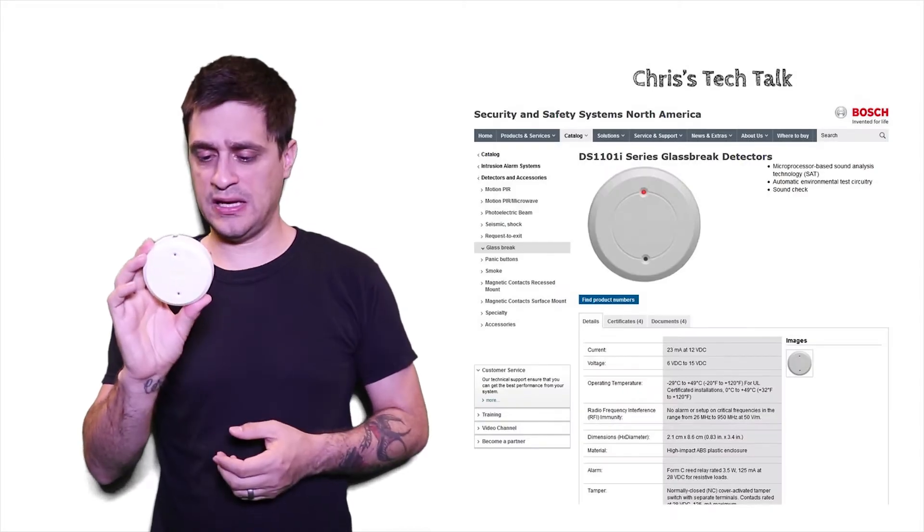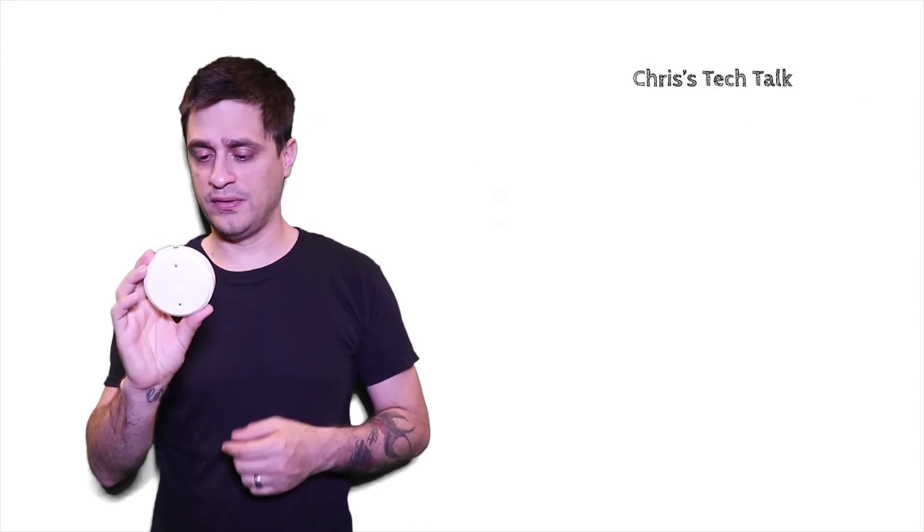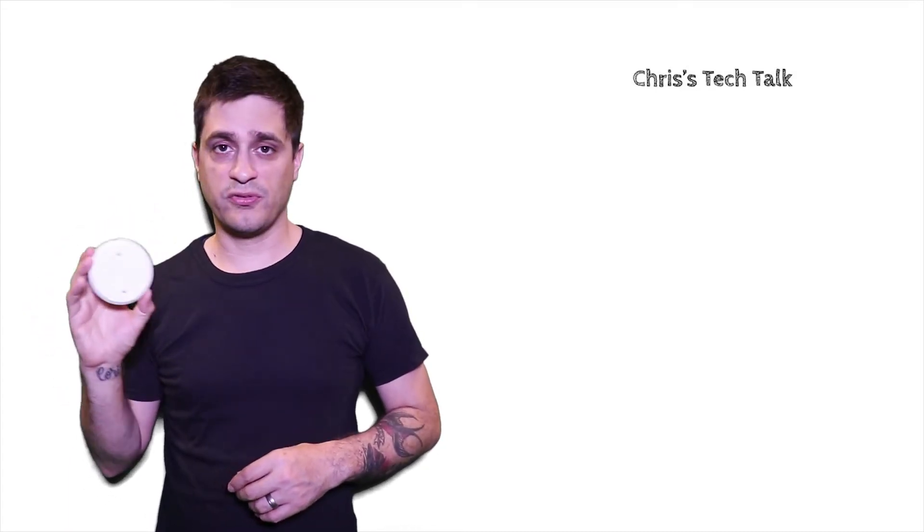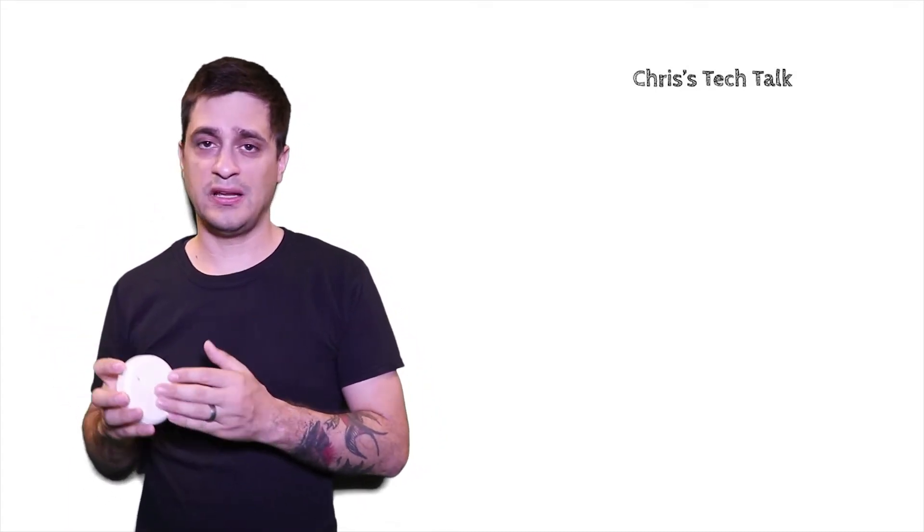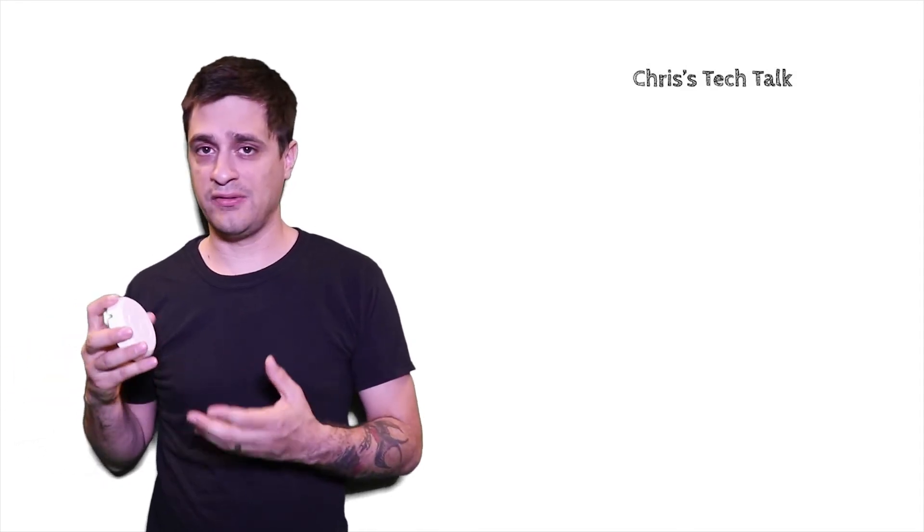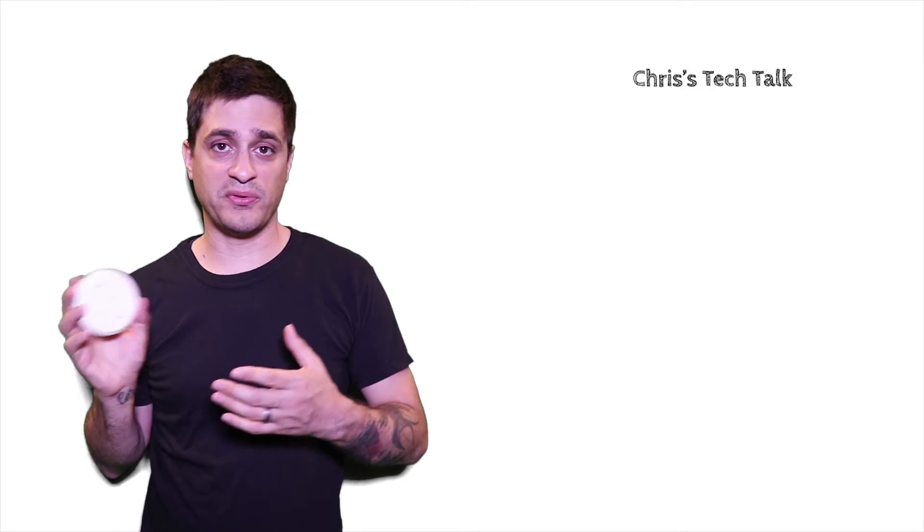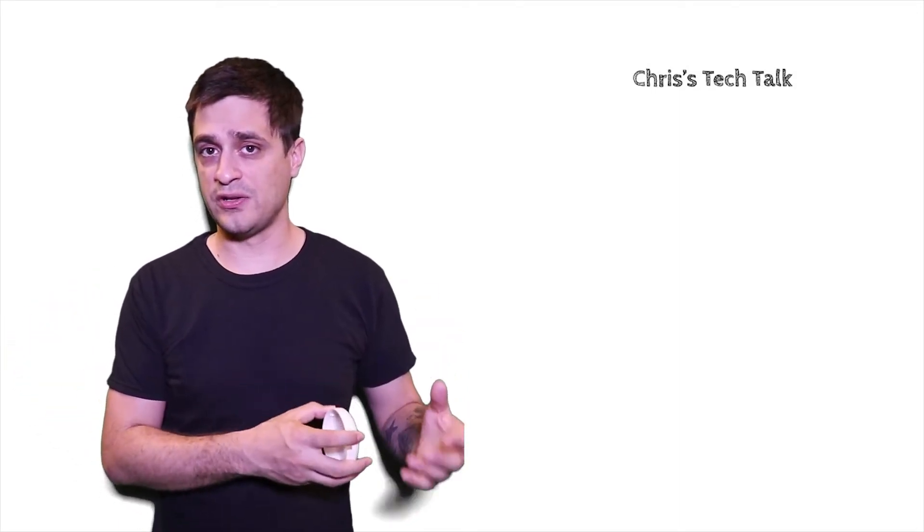So today I'm going to be looking at a Bosch DS1101. This sensor looks for frequencies in one location. If you go to another sensor like a Vitron or another company you'll notice that it may look for frequencies in a different location on the spectrum.